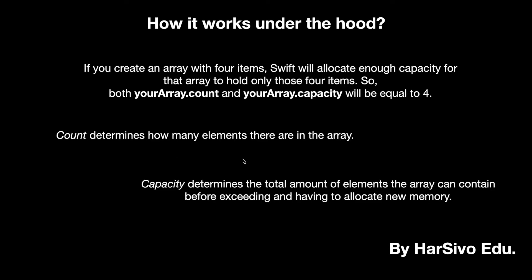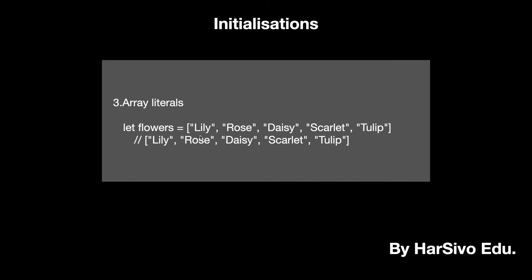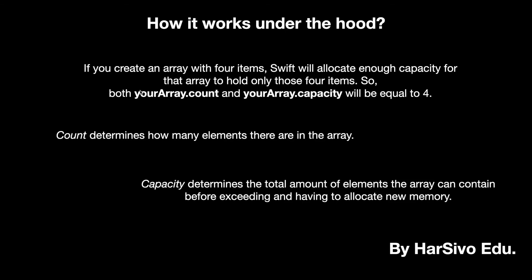Now we see how the array works. When you have an array created with 4 elements, in memory we create 4 consecutive spaces to store these 4. Swift will allocate enough capacity for that array to hold only those 4 items. So both array.count and array.capacity will be equal to 4. Count means the number of elements you have in your array. Capacity determines the total amount of elements the array can contain before exceeding and having to allocate new memory.